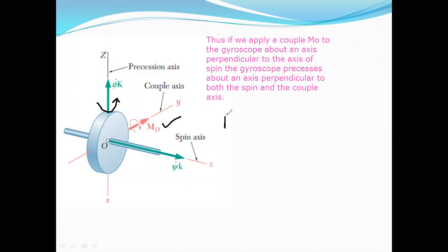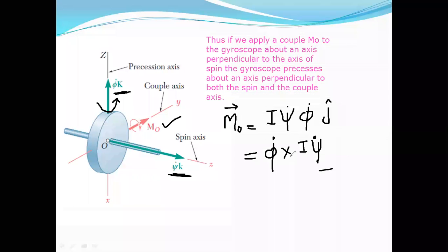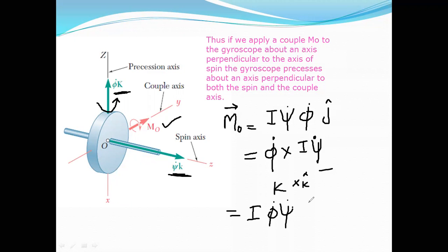The moment M₀ = I·ψ̇·φ̇·j-cap can also be written in vector cross product form as φ̇ (vector) cross I·ψ̇. The reason is that φ̇ is along capital K-cap and ψ̇ is along small k-cap (the spin axis). When you take the cross product between capital K and small k, the result is along j-cap. So the cross product gives I·φ̇·ψ̇·j-cap. Remember this vector form of expressing the gyroscopic precession moment.